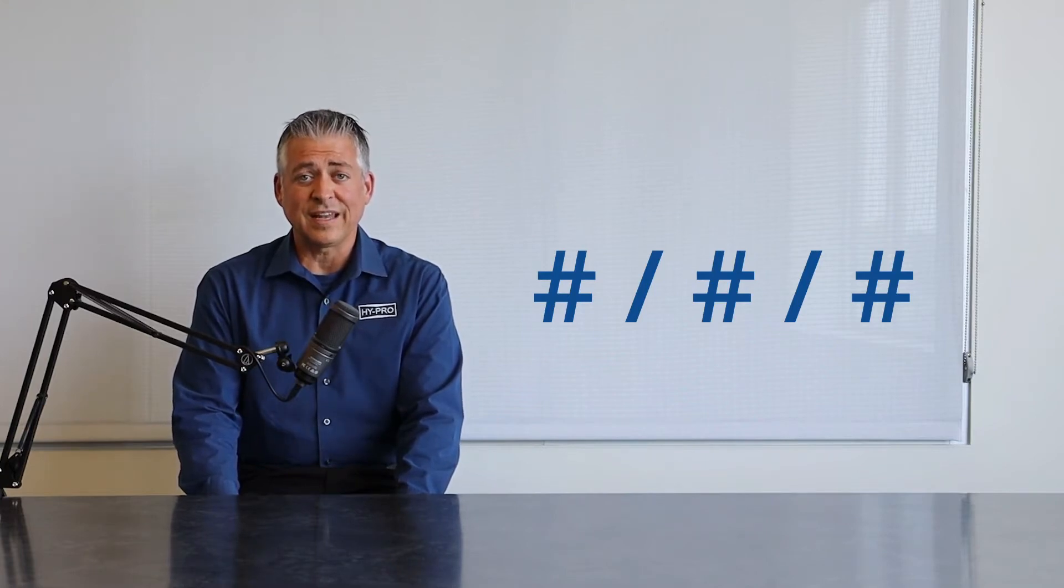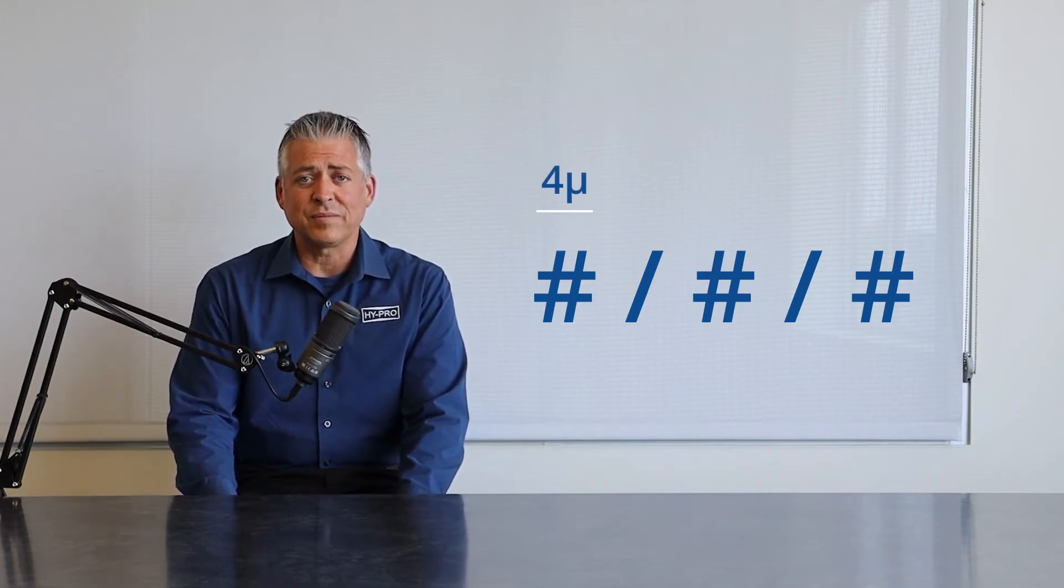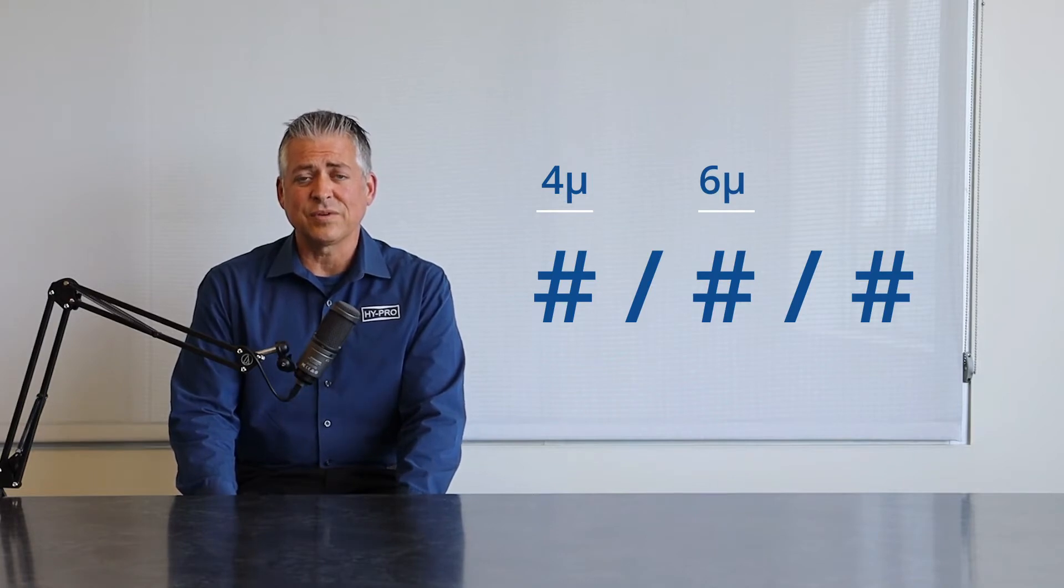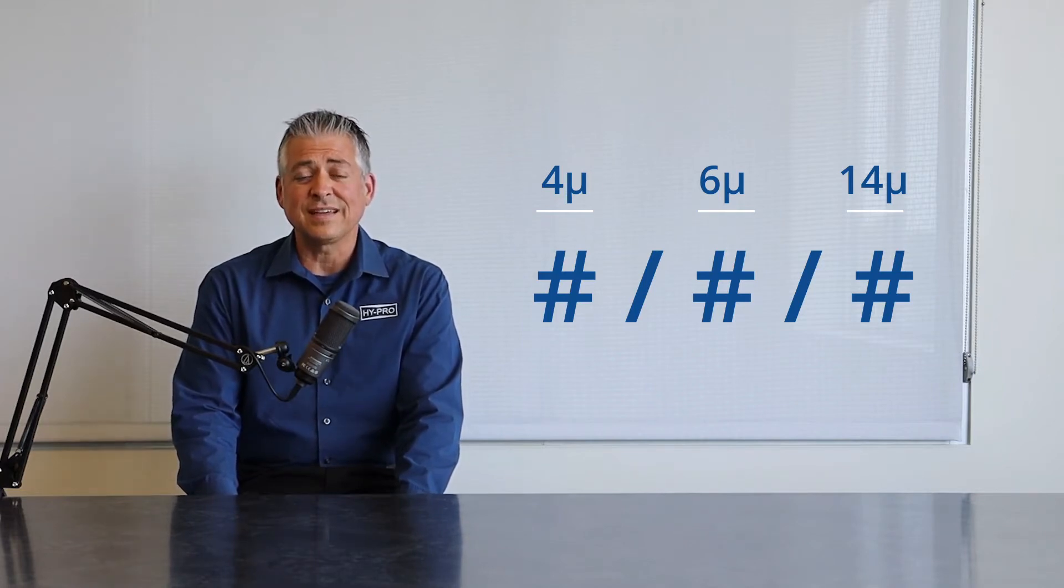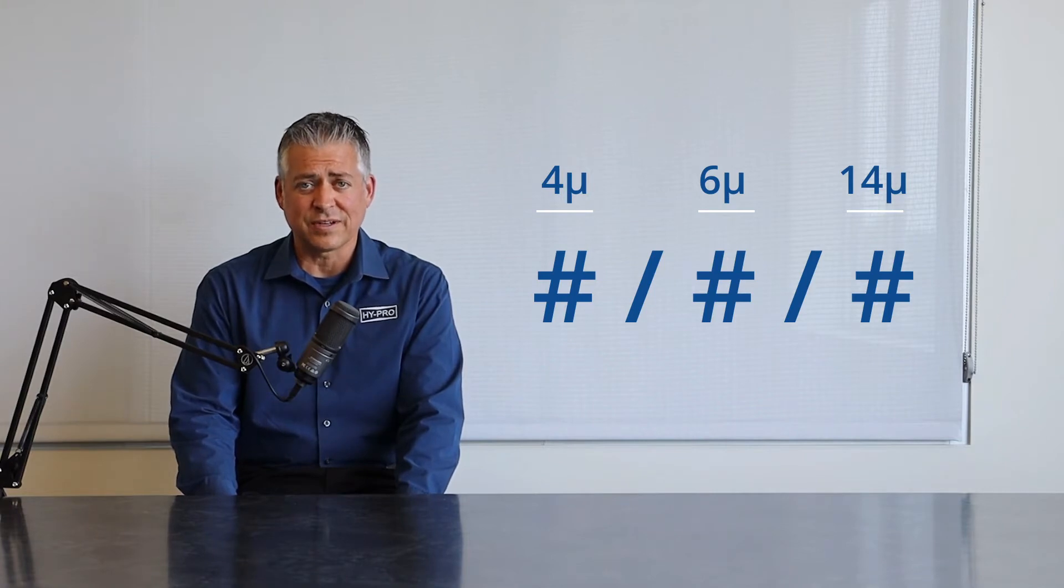ISO 4406 focuses on three of those channels. When you're reading the report from left to right, the far left number is the 4 micron and larger channel, the middle number is the 6 micron and larger channel, and the far right number is the 14 micron and larger channel. I like to focus on the far left number, the 4 micron and larger channel first, because it gives information of complete concentration.